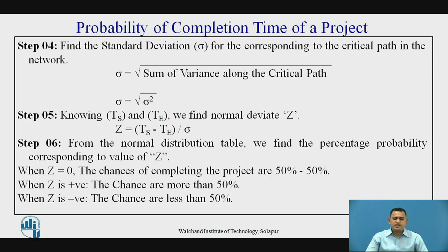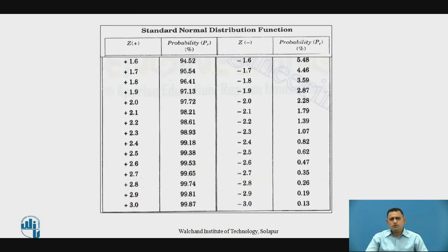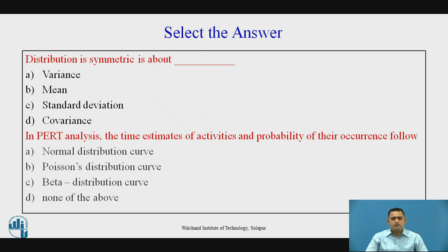In this table, the guideline states: if the z value is equal to zero, the chance of completing the project is 50 percent. If the z value is positive, the chance is more than 50 percent. If the z value is negative, the chance is less than 50 percent — meaning there is very little chance of completing the project as per schedule.